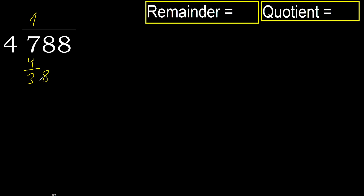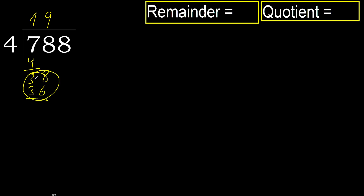Next: 38. 4 multiplied by 9 is 36, which is not greater. Ok, subtract: 38 minus 36 is 2.